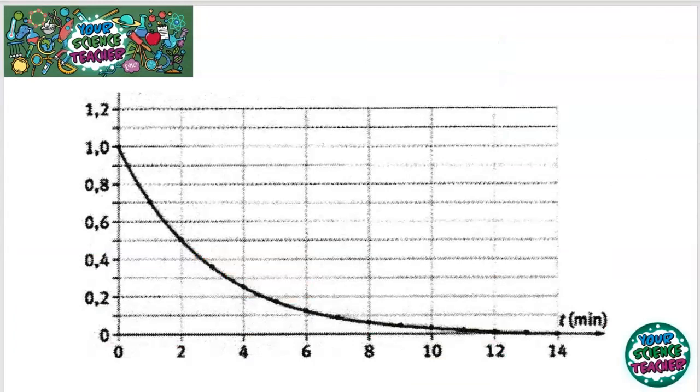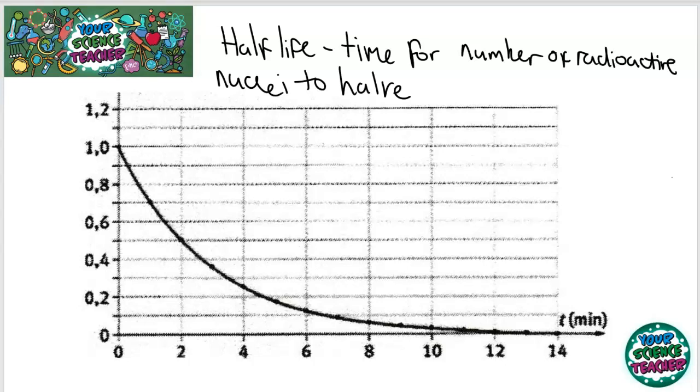Although radioactivity is a spontaneous process, the time required for half the nuclei to decompose is always the same. And this is called the half-life. Here I've drawn a typical half-life graph with time on the x-axis and number of radioactive nuclei in thousands on the y-axis. So this is the number of radioactive nuclei. And if we look at how long it takes for that to half, we've got 1,000 radioactive nuclei here. And if we go down here to 500 radioactive nuclei, we notice that it takes two minutes for it to half.